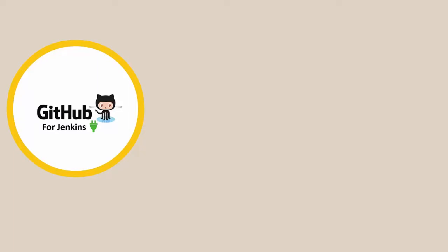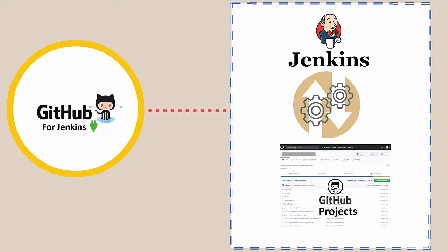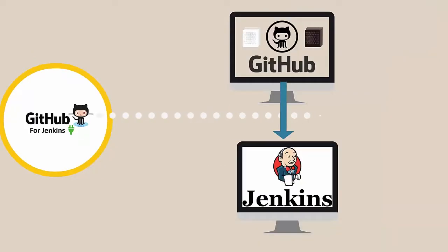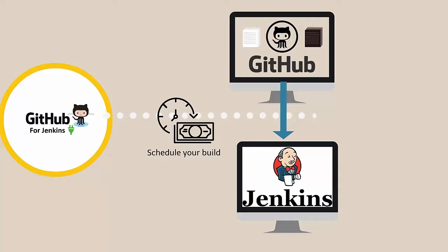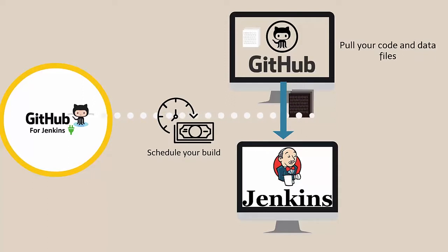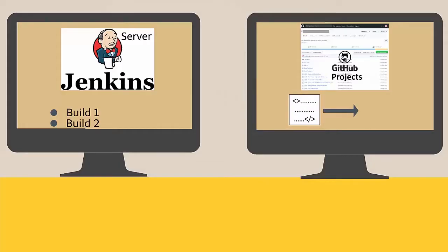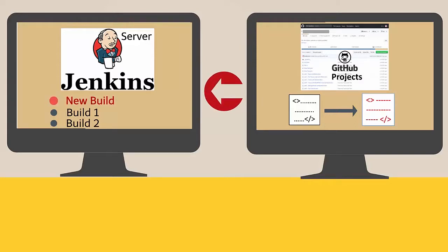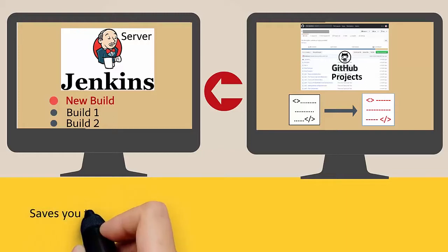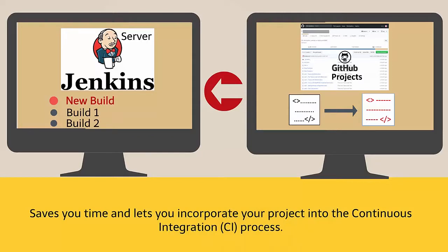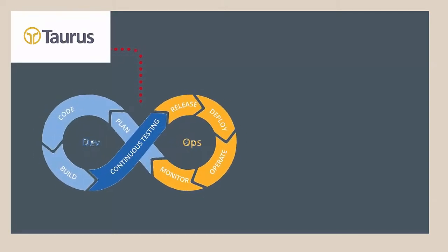The GitHub plugin for Jenkins is the most basic plugin for integrating Jenkins with GitHub projects. If you are a GitHub user, this plugin enables you to schedule your build, pull your code and data files from your GitHub repository to your Jenkins machine, and automatically trigger each build on the Jenkins server after each commit on your git repository.